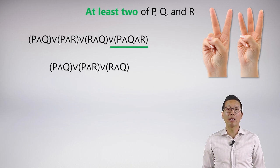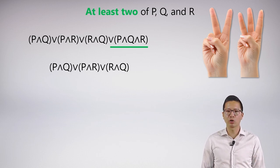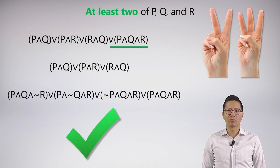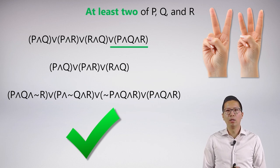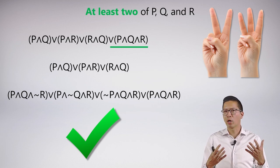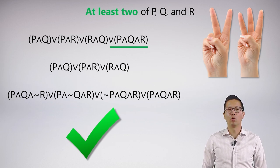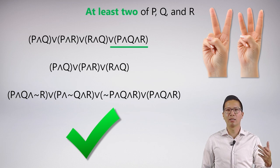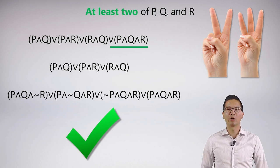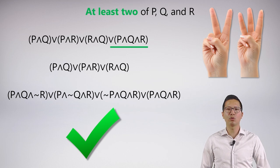There is another way of saying 'at least two of P, Q, and R': you can state the explicit cases — P and Q but not R, or P and R but not Q, et cetera. In this version, you would actually have to explicitly allow for the all-three case, because if you state the mutually exclusive explicit cases, they can't all be true at the same time. Any of these symbolizations would be acceptable.